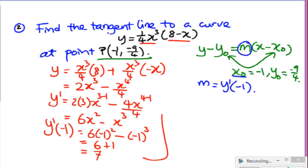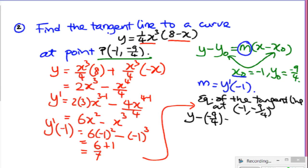Returning to this, the equation of the tangent line at the point negative 1, negative 9 over 4 will become y minus negative 9 over 4, when you have a negative value it's best to use the bracket, equals 7 times x minus negative 1.